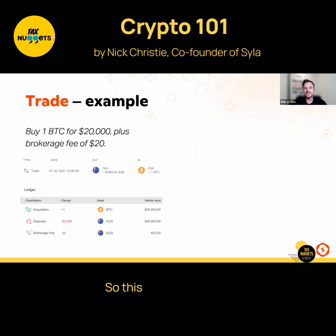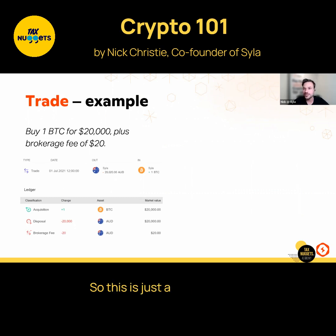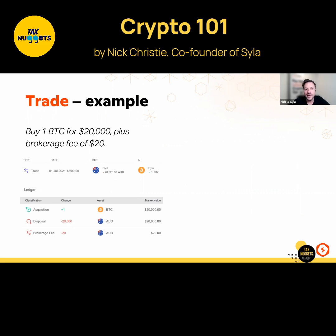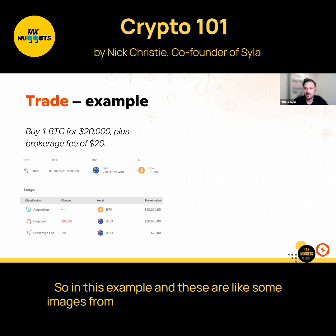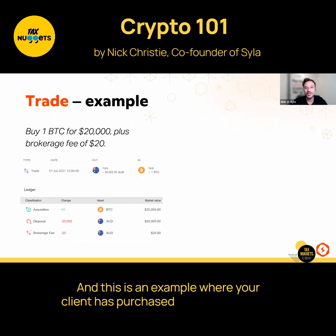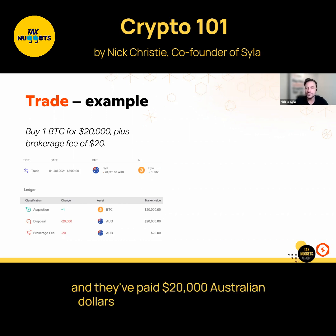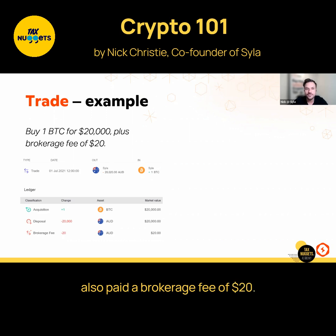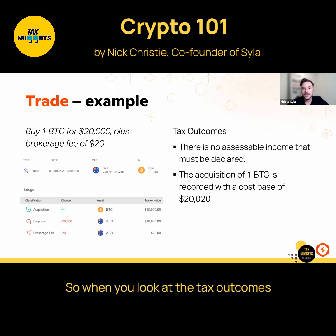This is an example of what we call a trade — a purchase or sale of cryptocurrency, just like a sale or purchase of shares. In this example, using some images from our software inside Silo, your client has purchased one unit of Bitcoin and paid $20,000 Australian dollars, plus a brokerage fee of $20.